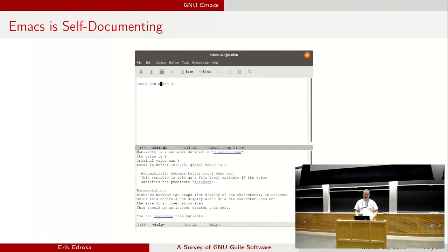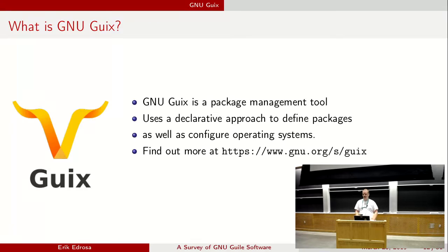One important thing about GNU Emacs is that it's self-documenting — one of my favorite features. There are tons of commands that help you understand what the software is doing and how it works. In this example, using 'describe-variable,' you can give a variable name and it will point to the documentation for that variable, as well as tell you the initial value, where to find it in the source code, and additional details. There are other help commands like 'describe-function,' 'describe-mode,' and plenty of others to explore.